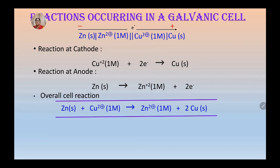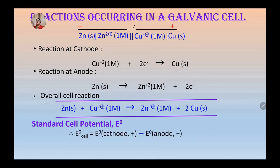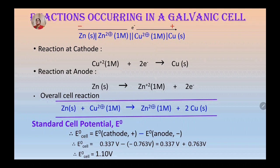Students, standard cell potential E0 is the potential of the cell given under standard conditions of temperature and pressure. That can be calculated by the formula E0 cell is equal to E0 cathode minus E0 anode. You can get the values of E0 for copper and E0 for zinc from EMF series. Therefore, E0 cell is equal to 0.337 minus of minus 0.763 volt which is equal to 1.10 volt.